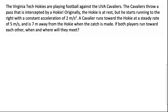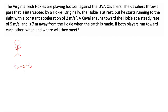Whenever we want to solve a physics problem, the first thing we should do is make sure we actually understand the problem at hand. One really effective way to do that is to draw a picture. So I'm going to draw a picture of the Hokie just as he catches the ball. We know that his initial velocity is 0 meters per second — VI subscript H, where H stands for Hokie. These subscripts always tell us information about the variable. And I know that he accelerates to the right at 2 meters per second squared.